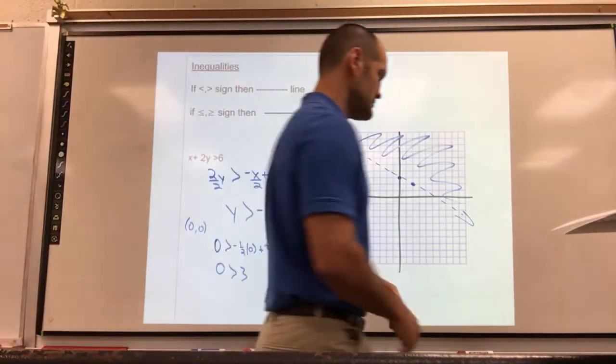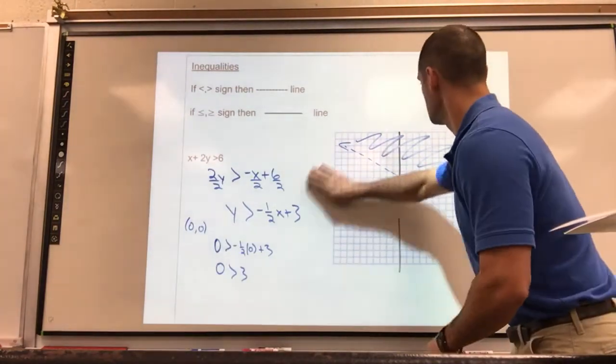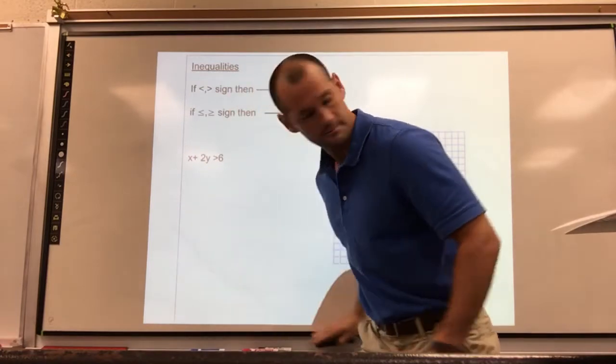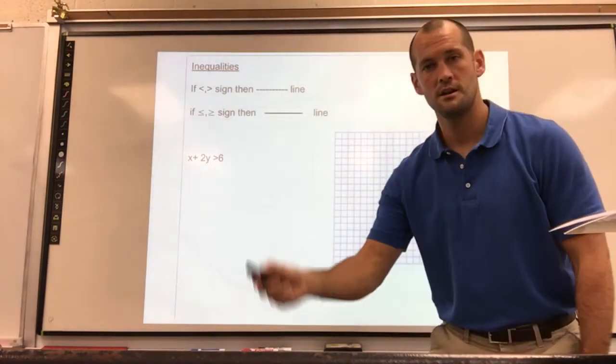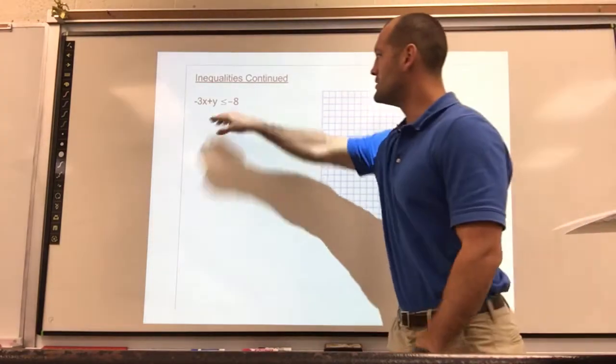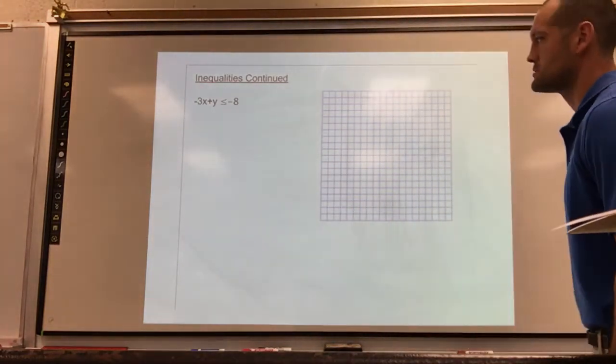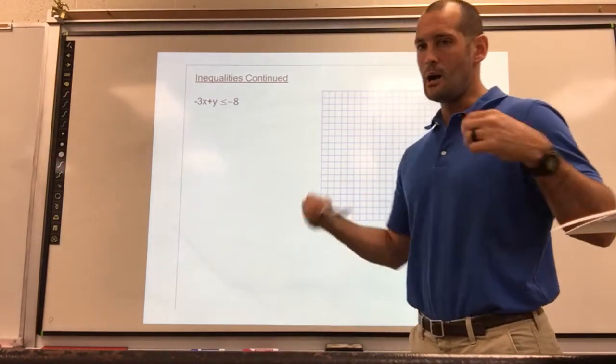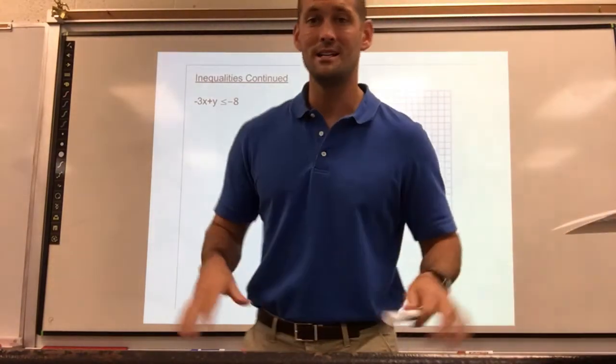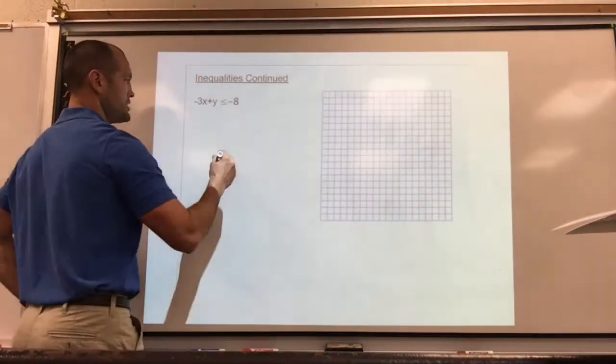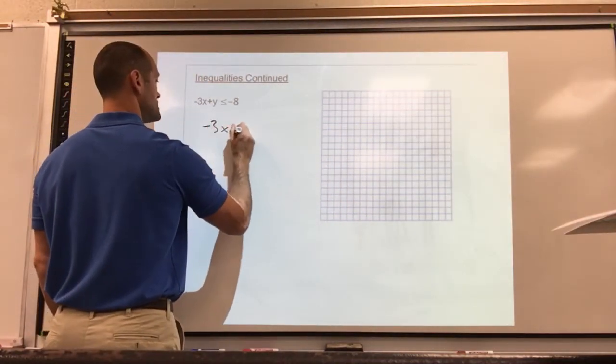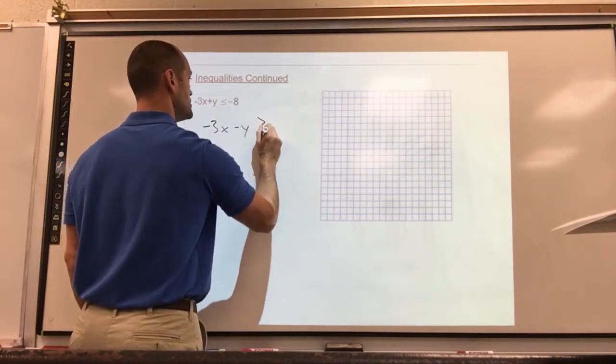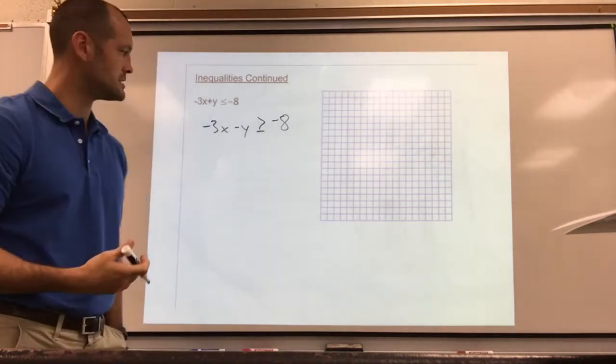We're going to do one more together. We have a new inequality: negative 3x plus y is less than or equal to negative 8. Now I'm actually going to call an audible here. I want to do something different, so I'm going to write a different equation down. I'm going to just change one thing. Let's make it negative 3x minus y greater than or equal to negative 8. I'll explain why I'm doing this in a second.